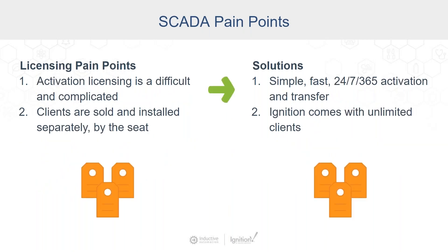These next few pain points are the big ones we talked about at the beginning of the webinar — the kinds that can stop a project in its tracks. Activation and licensing is a difficult and complicated task. And beyond that, clients are sold and installed separately by the seat. With Ignition, activation and transfer is simple and fast, 24/7, 365. And just like the unlimited number of designers, Ignition also comes with unlimited clients.